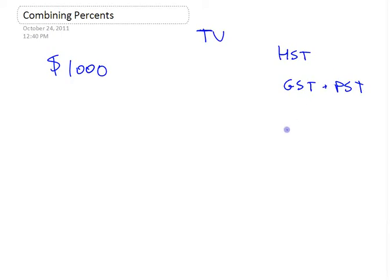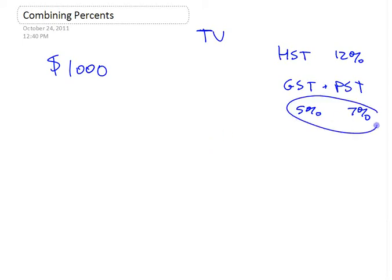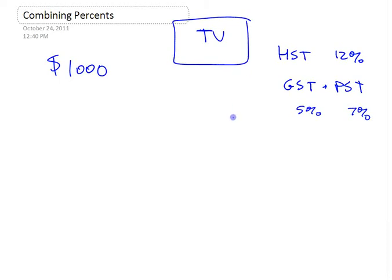When they made the switch from GST and PST to just a single tax, they just added the two taxes together. This used to be 5%, this used to be 7%. When they combined them to make the HST, they said, let's just make it 12%. Can you combine those two things together? Sometimes you can combine percents like this and sometimes you can't. In this case, you can combine them because they're both percentages of the same thing — your TV costs $1,000.